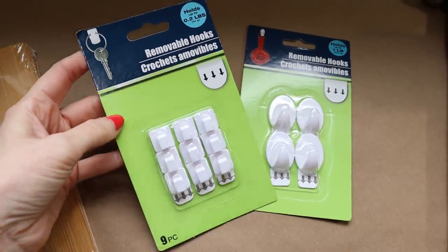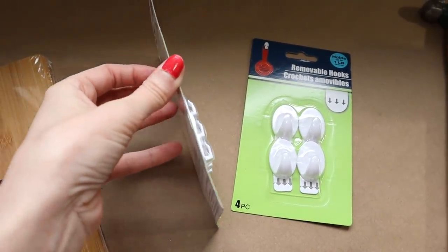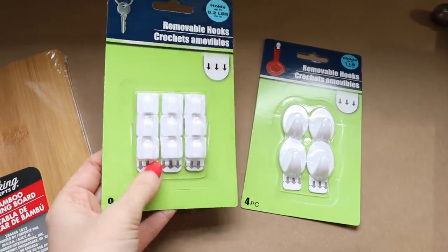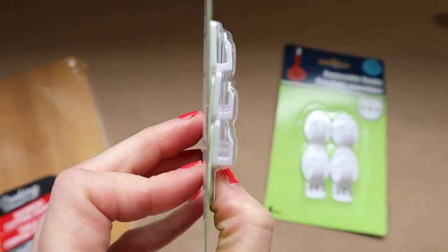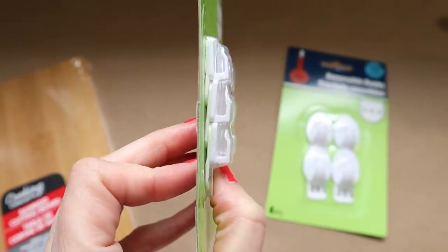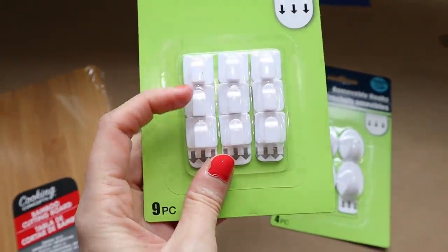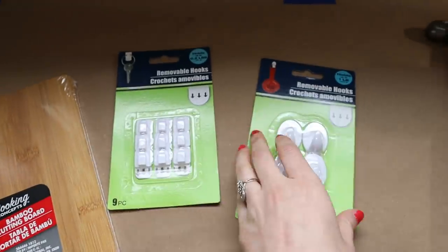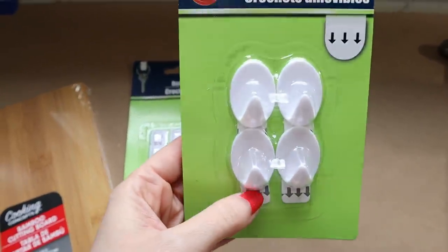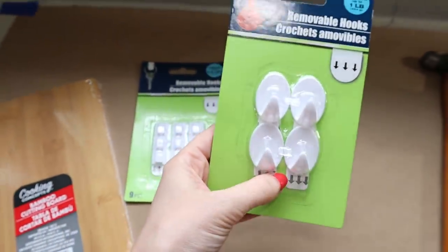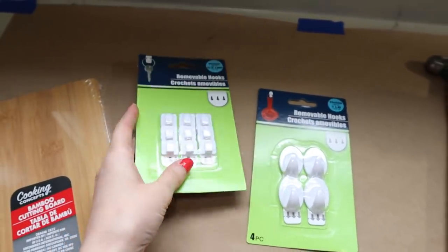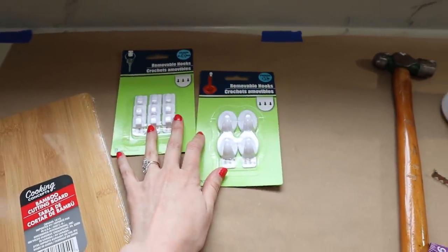I also have some removable hooks here, command style hooks. I bought two different kinds because I really like these since they don't stick out real far. I'm hoping these will work but if they don't then I have these as a backup. They're a little bigger and there's nothing wrong with them, but a more minimalist look might look better with this Ray Dunn style.